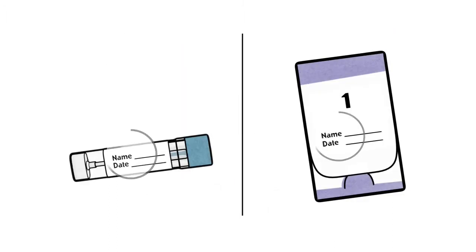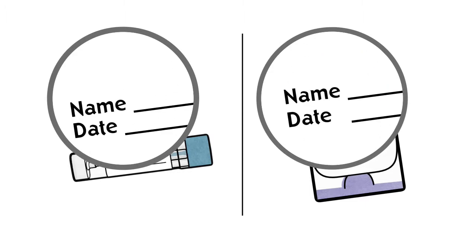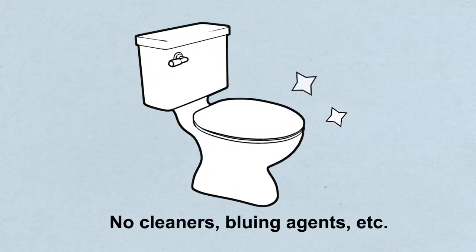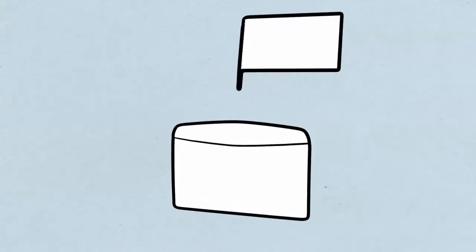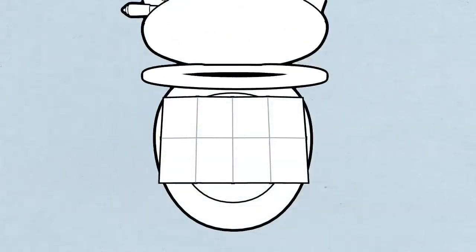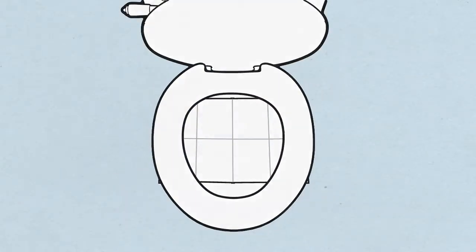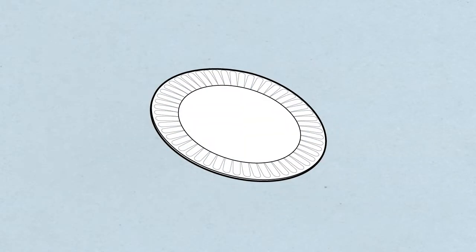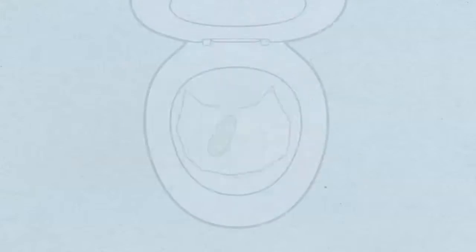First, make sure all required information is printed clearly on each bottle or card. To collect a sample, start with a fresh toilet, free of cleaners. Use either the collection paper provided, a few layers of toilet paper, or a clean, dry container or paper plate to catch the stool.